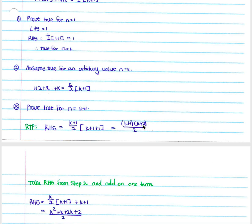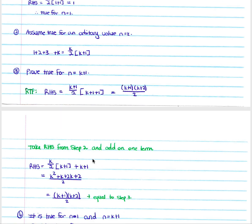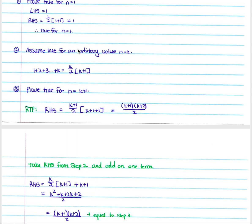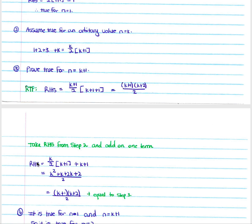We take the right hand side from step two — we assumed the sum to k terms equals k over 2 times (k plus 1) — and we add on the next term, k plus 1. Simplifying gives k squared plus k plus 2k plus 2, all over 2, which equals k plus 1 times (k plus 2) over 2. This matches what we were required to prove, so it is true for an arbitrary value plus one, and therefore true for all values.